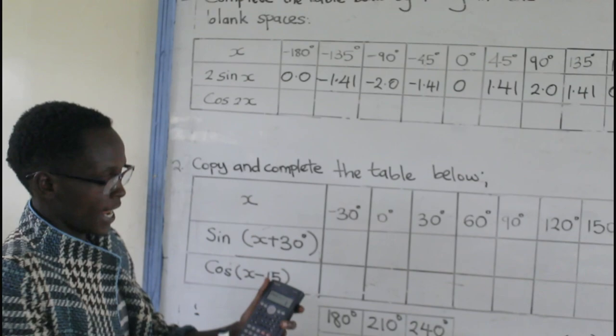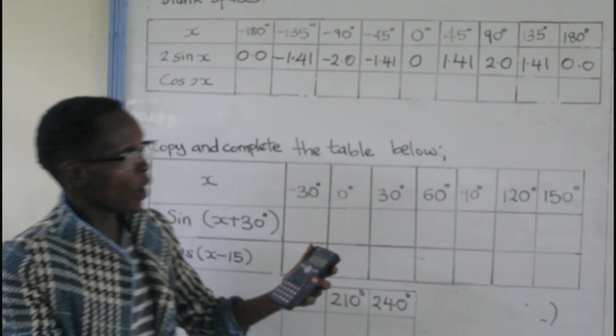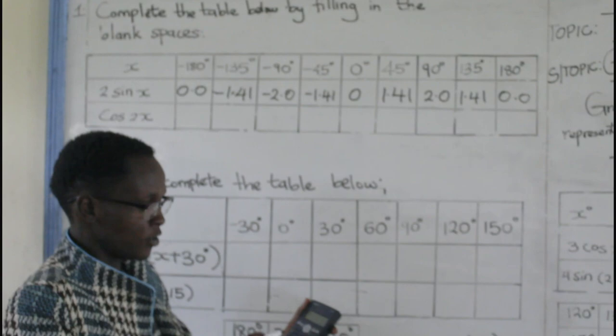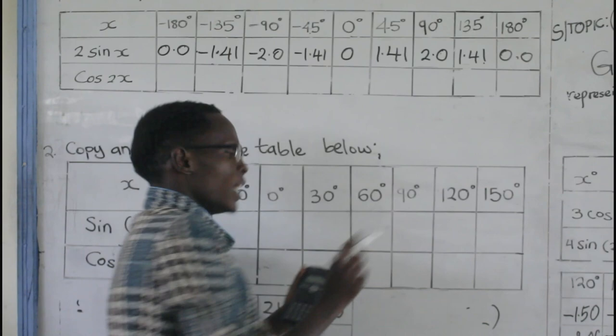2sin(negative 45 degrees) gives negative 1.41. 2sin 0 degrees gives 0.0. 2sin 45 degrees gives 1.41. 2sin 90 degrees gives 2.0.